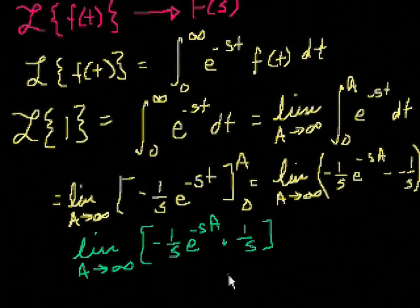So what's the limit as a approaches infinity? Well, what's this term going to do? As a approaches infinity, the exponent is going to get, if we assume that s is greater than 0, and we'll make that assumption for now. Actually, let me write that down explicitly. Let's assume that s is greater than 0. So if we assume that s is greater than 0, then as a approaches infinity, what's going to happen?